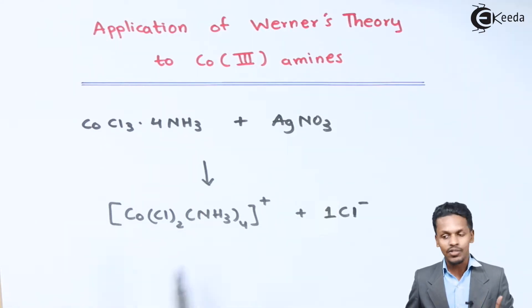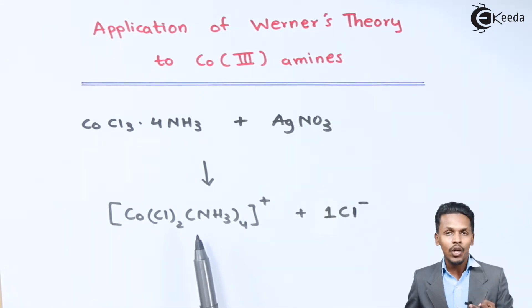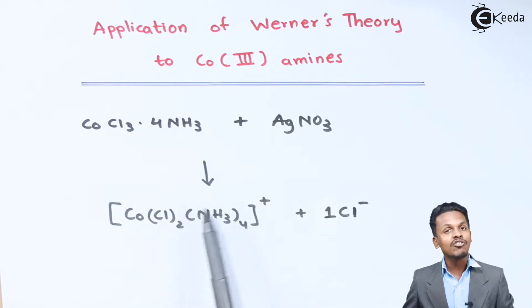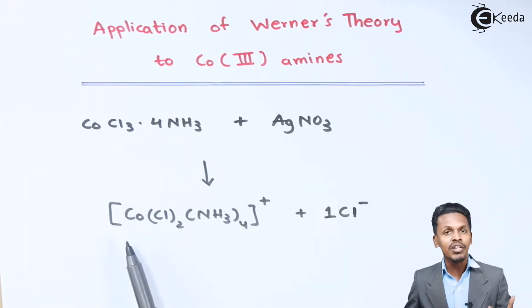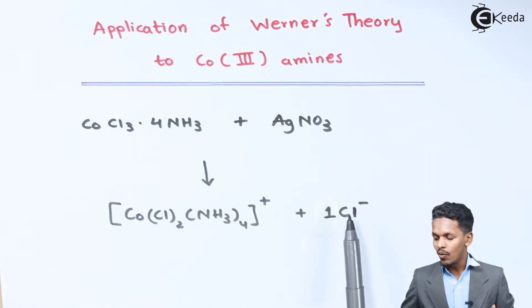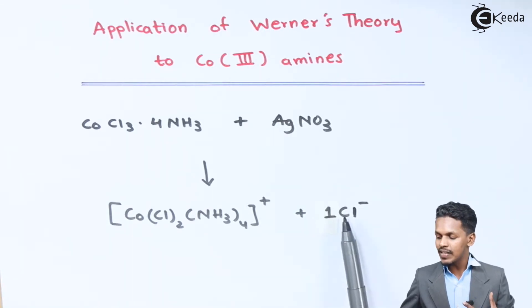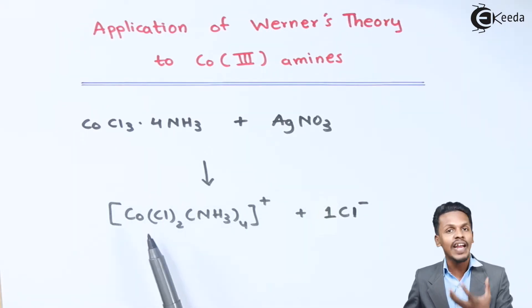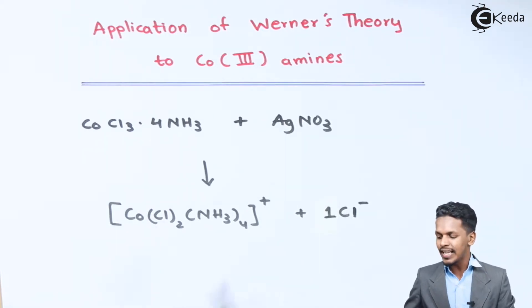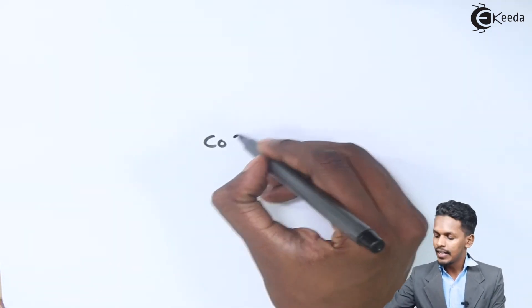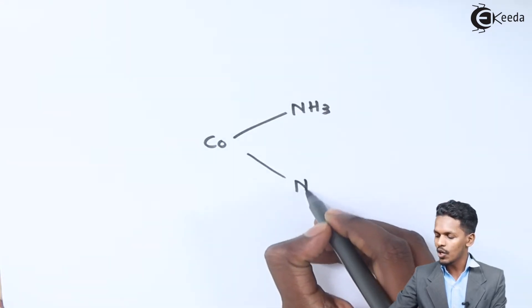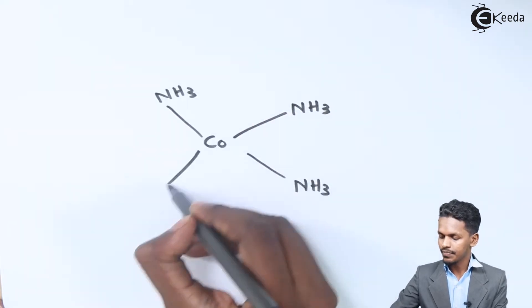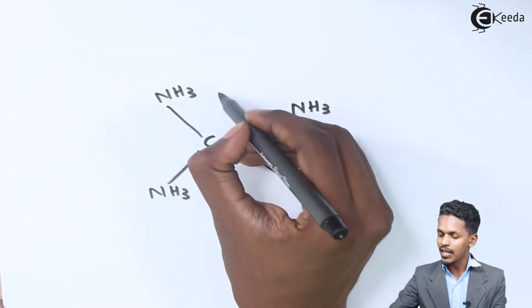This proves that the coordination number of cobalt is six, since cobalt is associated with six groups or atoms — four NH₃ groups and two Cl atoms. The coordination number of cobalt is six, while one of the Cl is removed upon ionization.